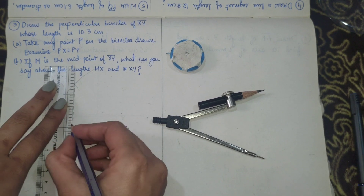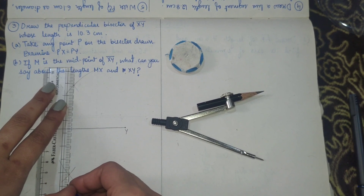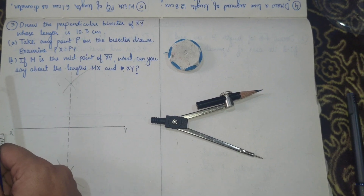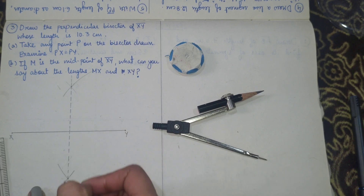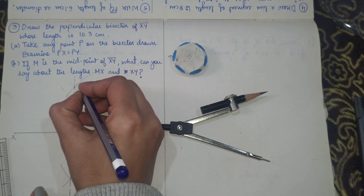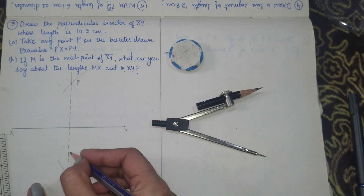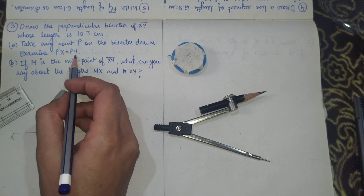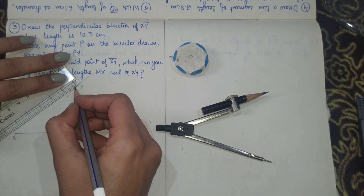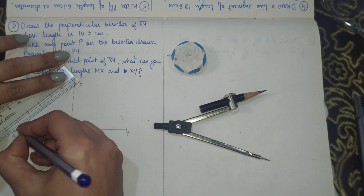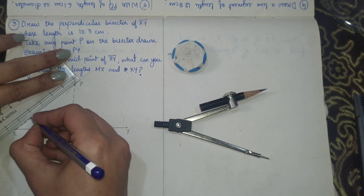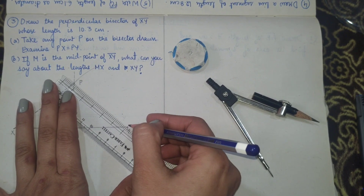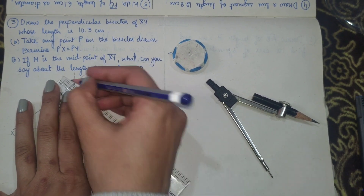You have drawn the perpendicular bisector of XY. For part A, take a point P anywhere on this bisector line. I'll take point P here. Now join points P and X, and P and Y. Be careful while drawing the lines - do not move your scale. Then measure these line segments - they should be equal in length.